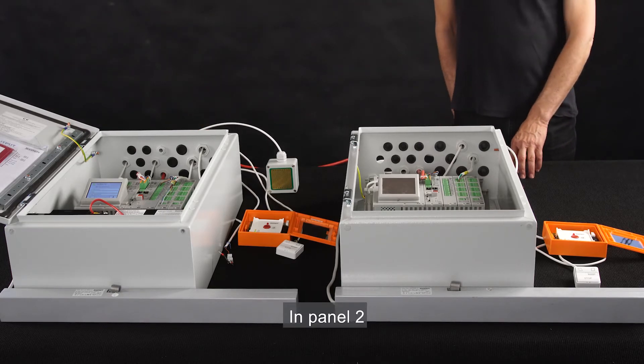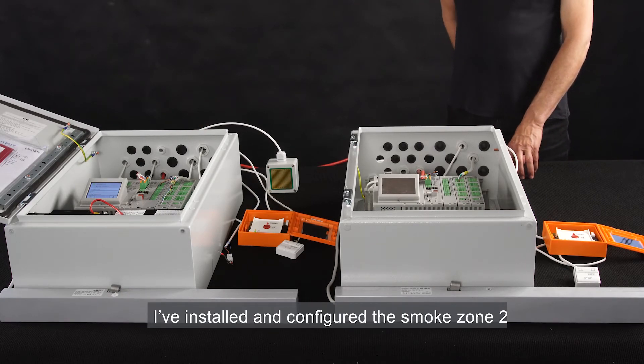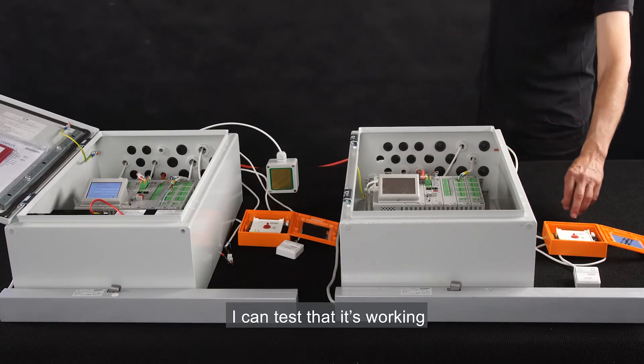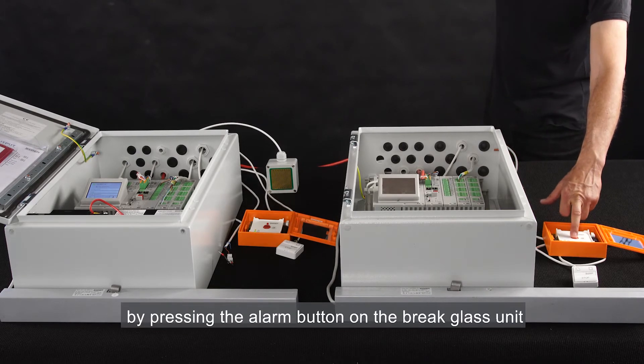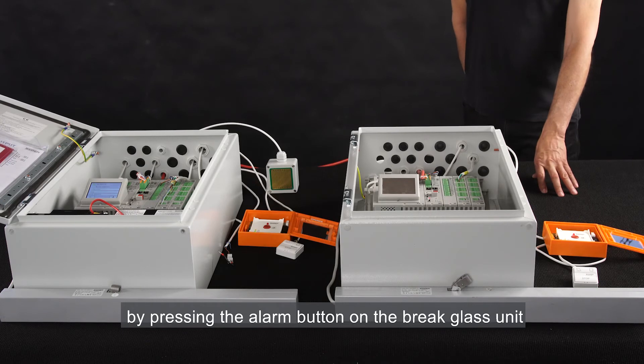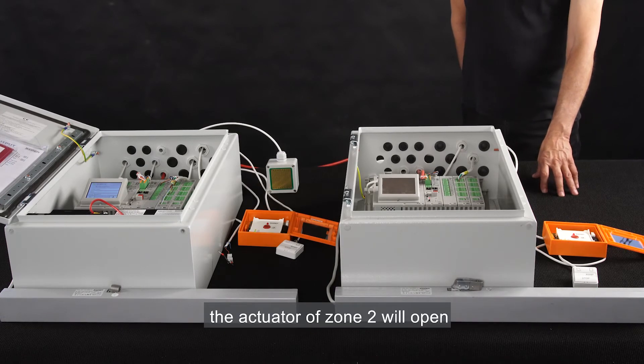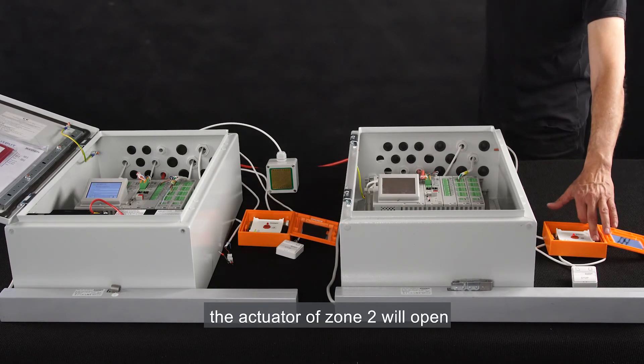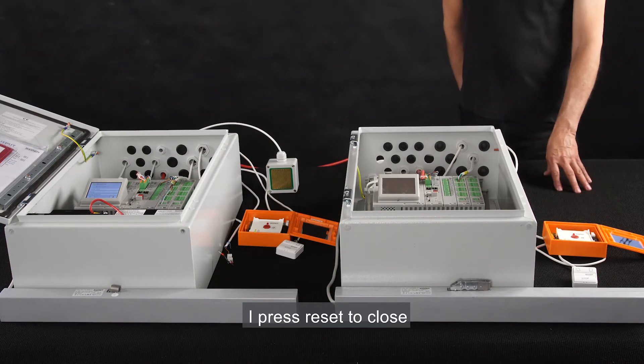In panel 2, I've installed and configured Smoke Zone 2. I can test that it's working by pressing the alarm button on the brake glass unit. The actuator of zone 2 will open. I press reset to close.